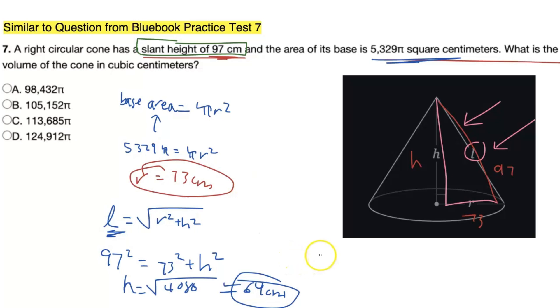So now we have the radius and now we have the height. What do we do from here? Well, we just use one last formula, which is the volume of the cone. So the volume of the cone is equivalent to 1/3 times π times r² times height. And so now it's pretty easy to find the volume because we know the radius and the height. So 1/3 times π times 73² times 64 is going to be approximately equal to 113,685.333π. We get a decimal, but of the answer choices we have, it lines up pretty nicely with answer choice C.